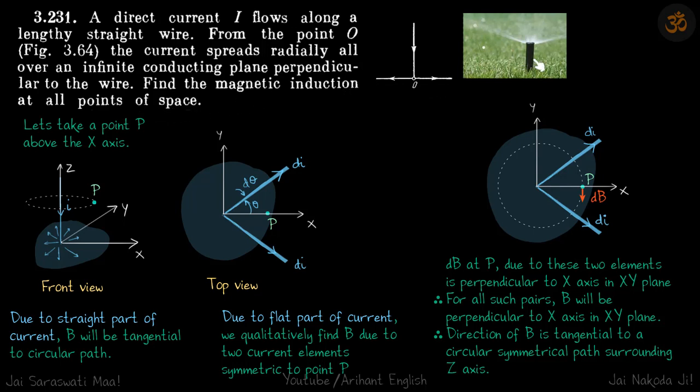To visualize this, you can think of it as a sprinkler. Water comes here and then radially in all directions the water flows out. Similarly, this is the inverted figure. If I invert this figure, the current is coming like this and then it's spreading in all directions.